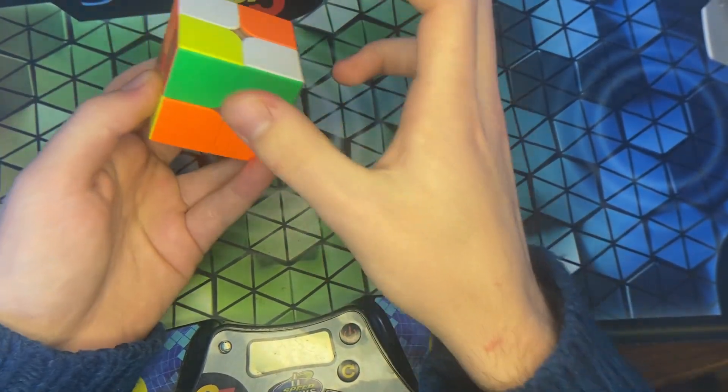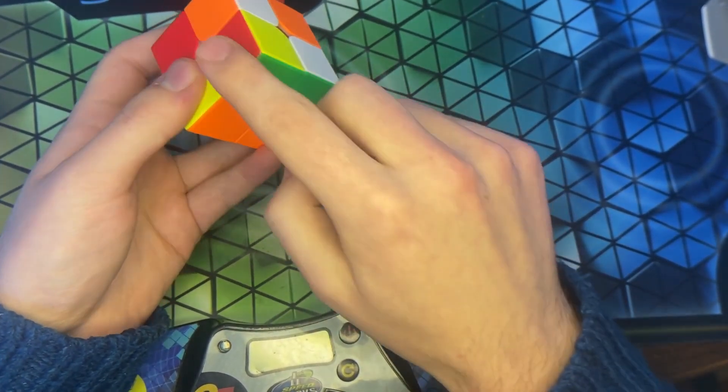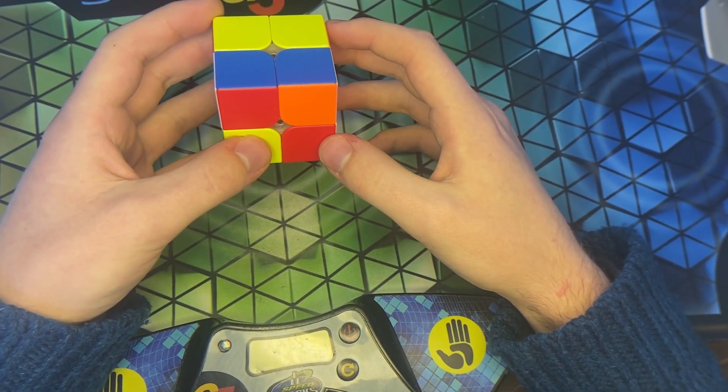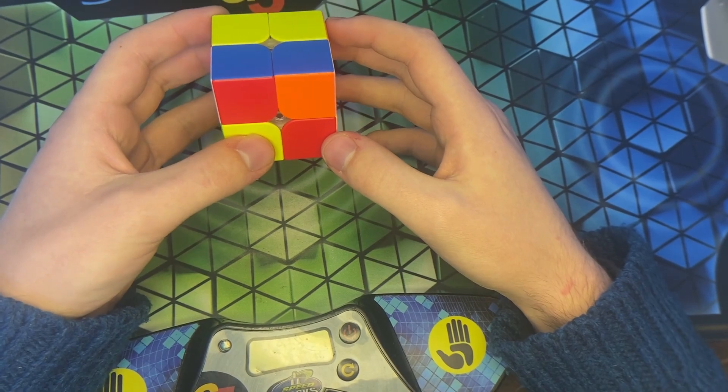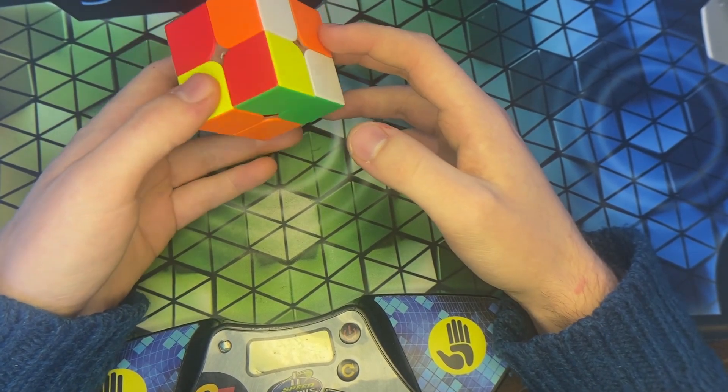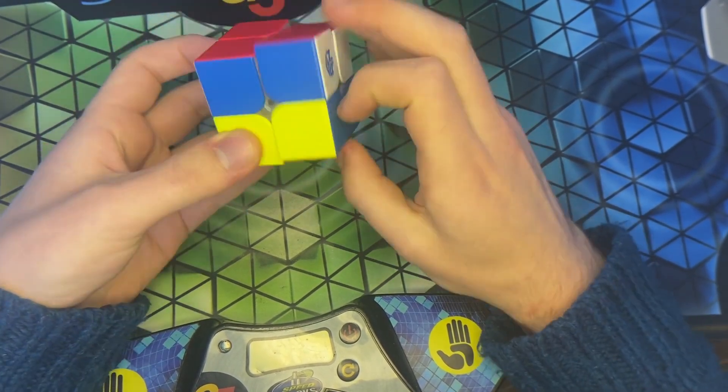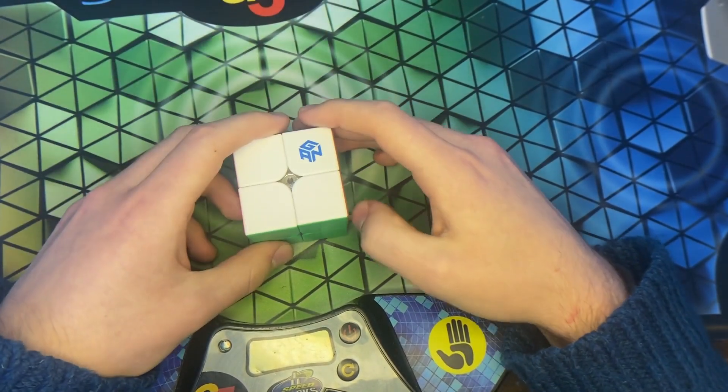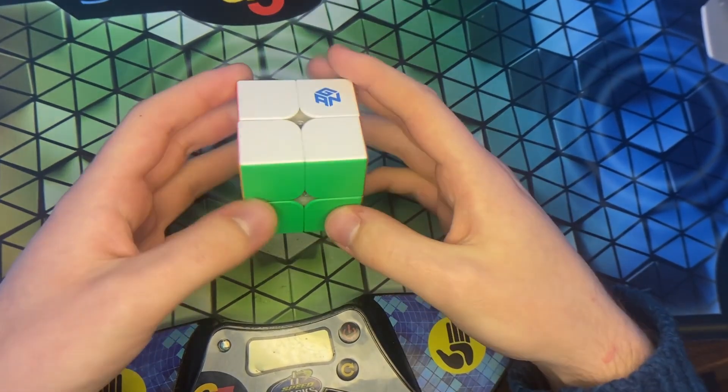You want to make a sort of T shape with opposite corners. So, F2, R2, and then the alg, which actually you can cancel into, is that. And U prime, and that's the whole solve. Now, on to the last example solve.